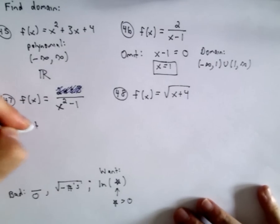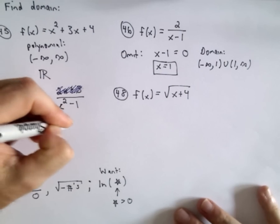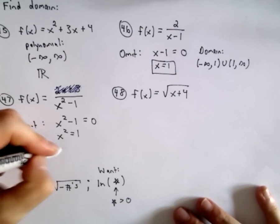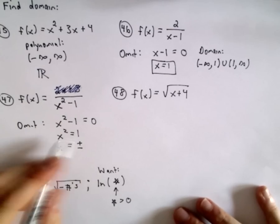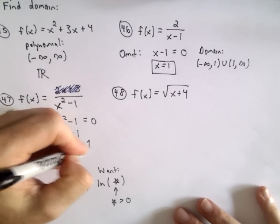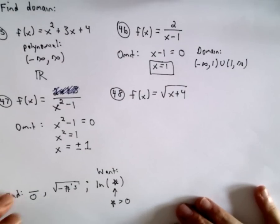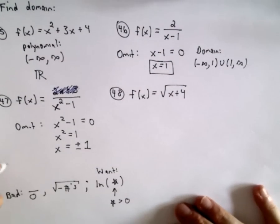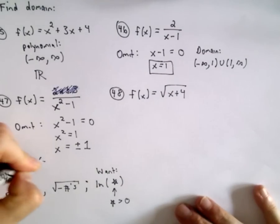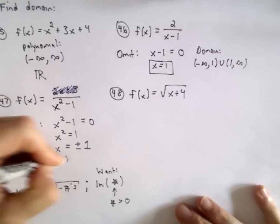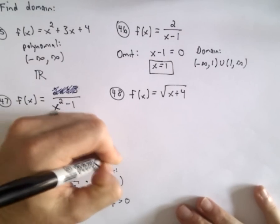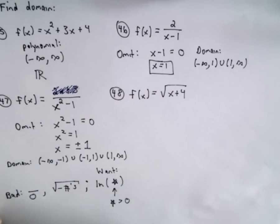I have to omit the values when the denominator equals 0. We could add one to both sides, take the square root of both sides. Don't forget when you take the square root of both sides, you have to include a positive and negative on one side of the equation. So the values we have to omit in this case will be positive and negative 1. So the domain in this case will be from negative infinity up to negative 1, union from negative 1 to positive 1, union from 1 to infinity. So again, we're just omitting the values negative 1 and positive 1.